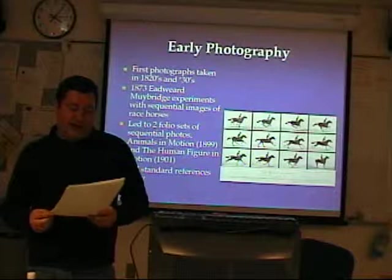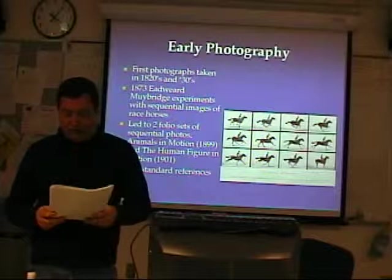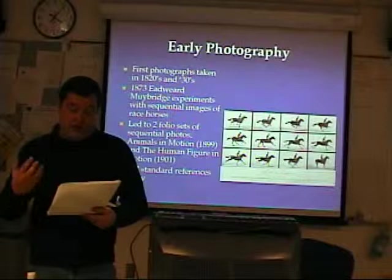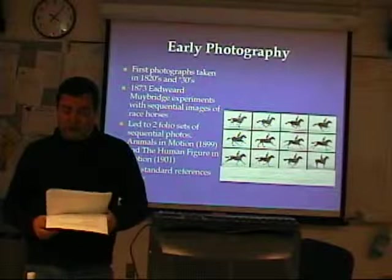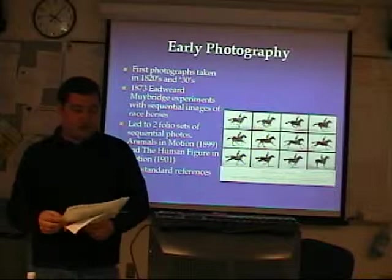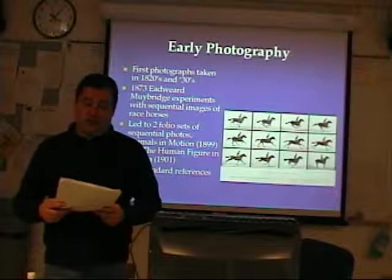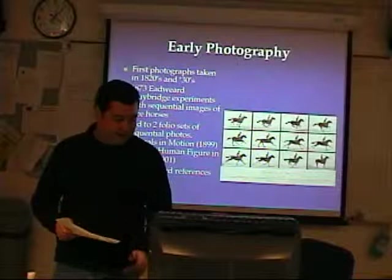The first photographs were taken in the 1820s and 30s, tending to be very static and mainly still life and portraits because of long exposure times. This changed with Eadweard Muybridge. In 1873, he conducted an experiment to resolve a friend's wager about whether a horse has all four legs off the ground when it trots. Muybridge set up a row of cameras triggered sequentially, each capturing a single frame of motion. The images could be flipped like a flipbook to see the motion and studied frame by frame. This led to two folio sets of sequential photographs: 'Animals in Motion' published in 1899, and 'The Human Figure in Motion' published in 1901 — both still considered standard references today.